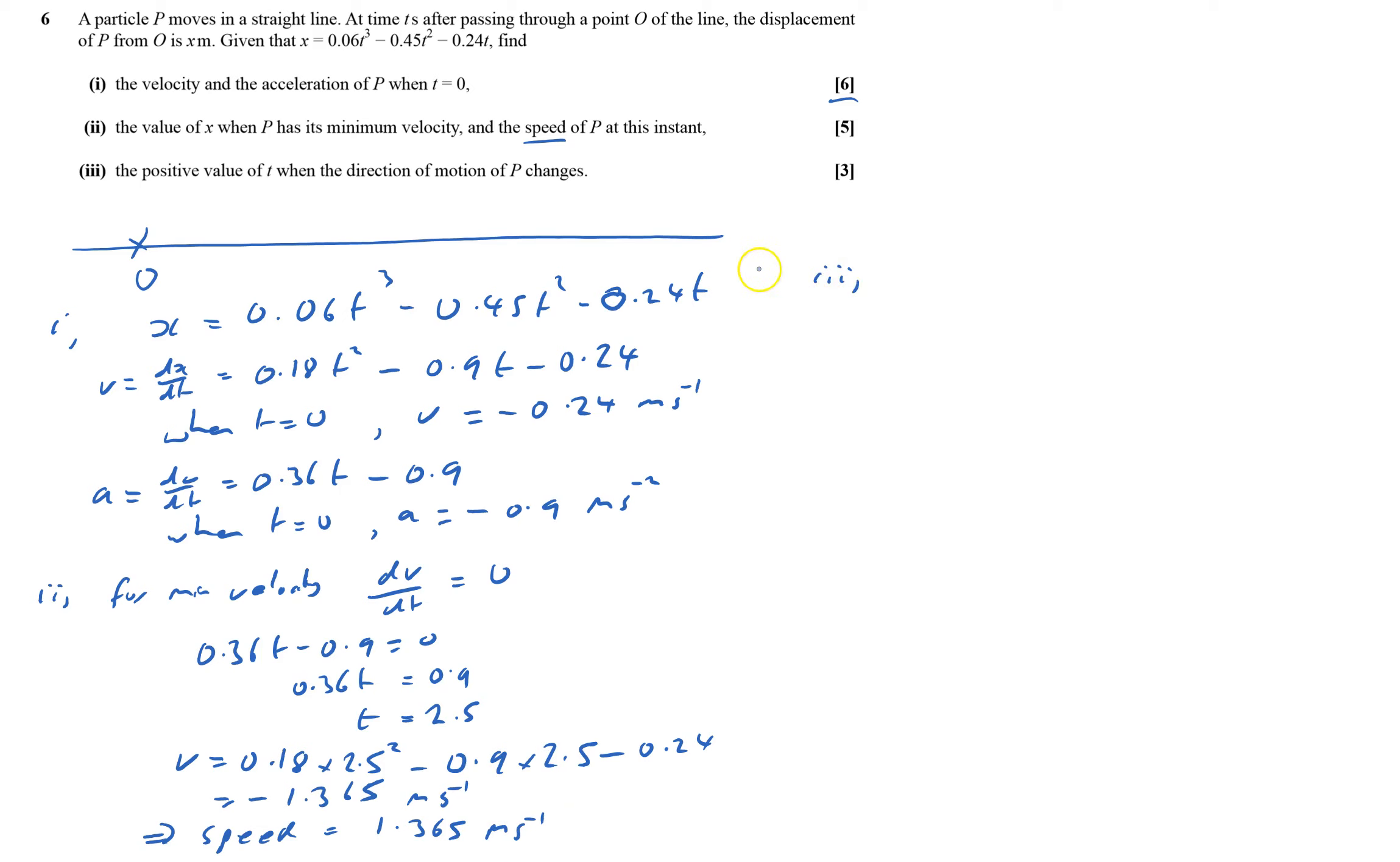Part three, find the positive value of t, which hints there may be a negative value, when the direction of motion of P changes. So I need to find when velocity is 0, because that will be on the cusp.